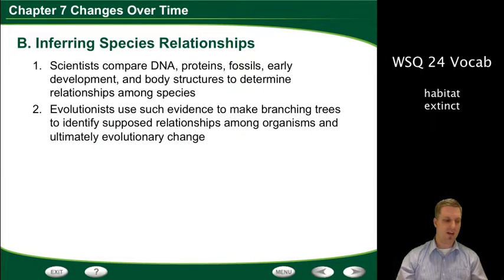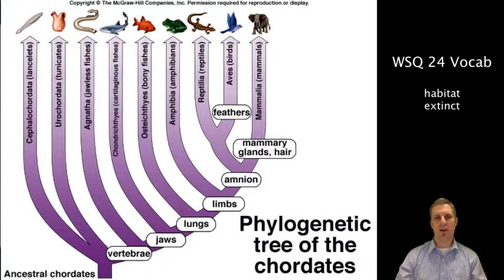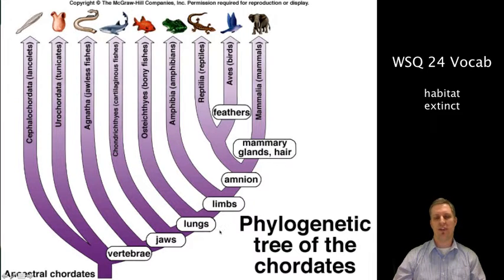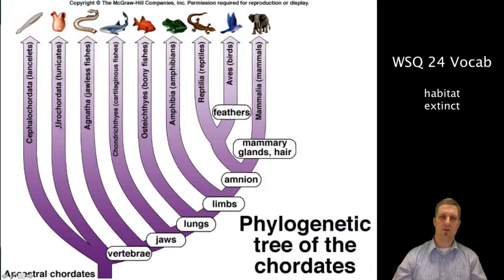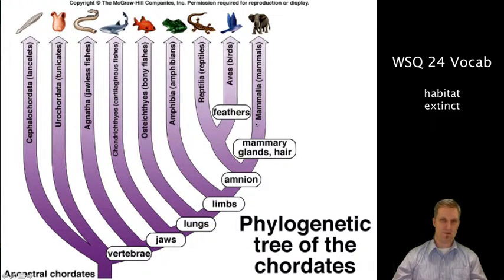Here's an example from a McGraw-Hill textbook from the 2000s — this is a phylogenetic tree of chordates. Chordates are organisms that have a backbone. So we have cephalochordata, urochordata, agnatha, chondrichthyes, osteichthyes, amphibia, reptilia, aves, and mammals — all organisms that have a backbone, all coming from the vertebrate and chordate lineage.